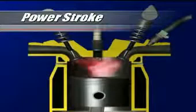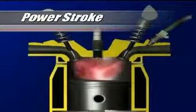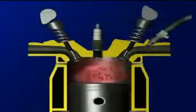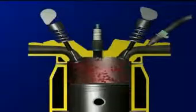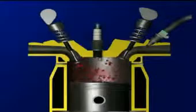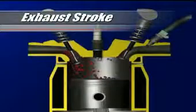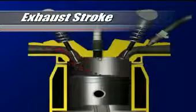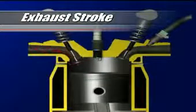At the conclusion of the power stroke, the piston reverses direction to expel the spent gases from the cylinder via the open exhaust valve. This is the final stroke of the cycle and is appropriately called the exhaust stroke. Once the exhaust stroke is completed, the cycle repeats.